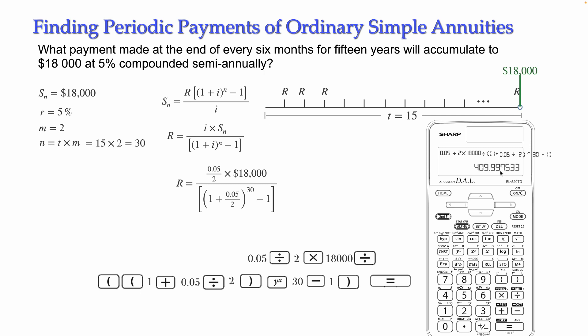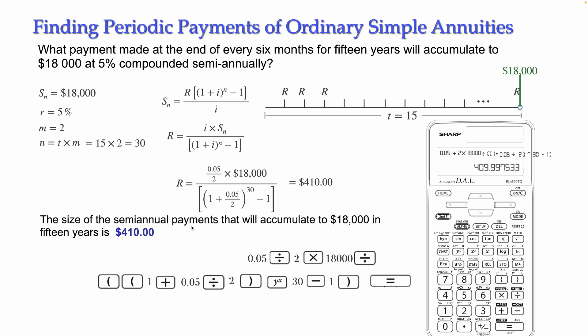Round it to two decimal places. The third decimal is 7, which is more than 4, so we round up. The 9 in the second decimal place becomes 10, so we carry: 0, carry 1 to the next 9, which becomes 10 again, so carry again — giving us 410. The answer rounded to two decimals is $410. The size of the semi-annual payments that will accumulate to $18,000 in 15 years is $410.